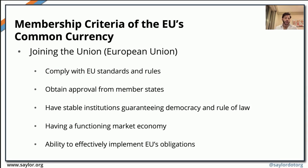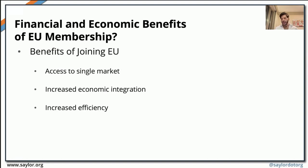What is important is to look at this particular criteria, because if they want to opt for using the single currency, this is going to play a crucial role. They also need to have the ability to effectively implement all the obligations imposed by the EU. Why should a country opt for joining the EU? One of the main advantages is access to a single market.